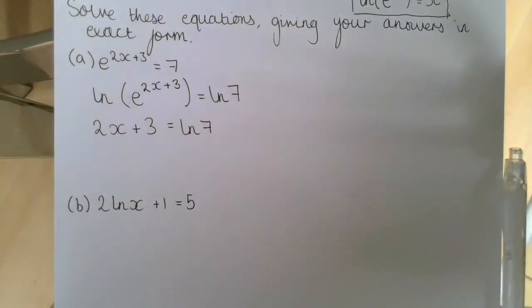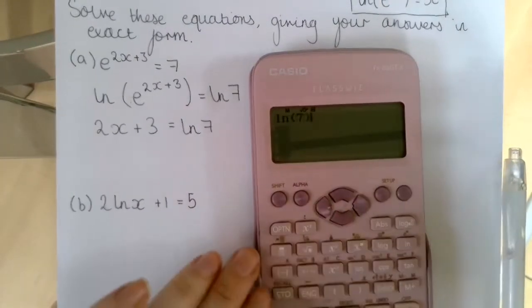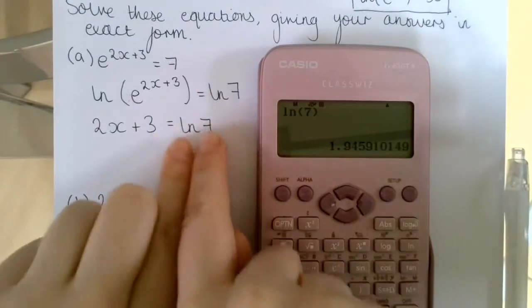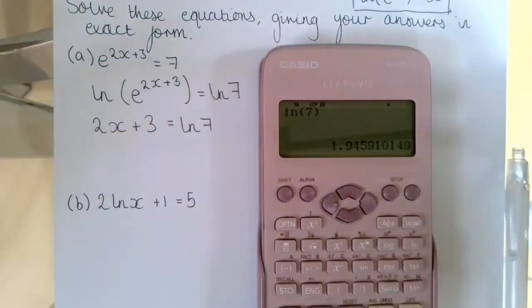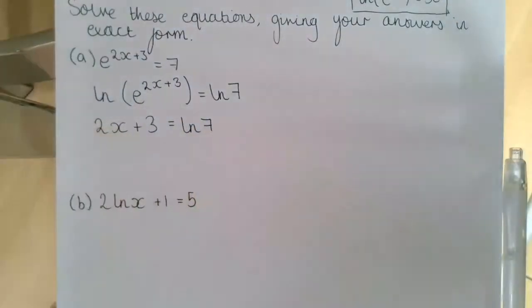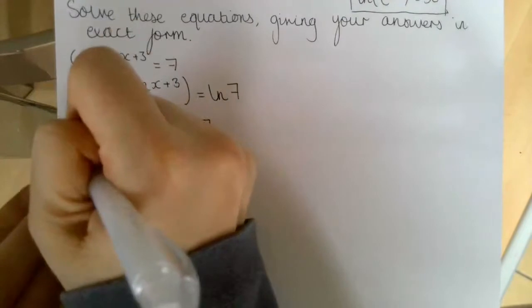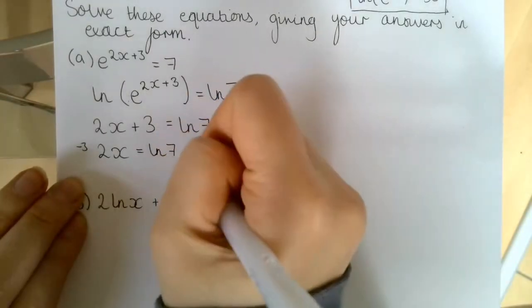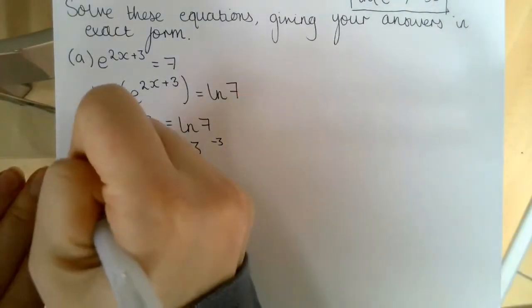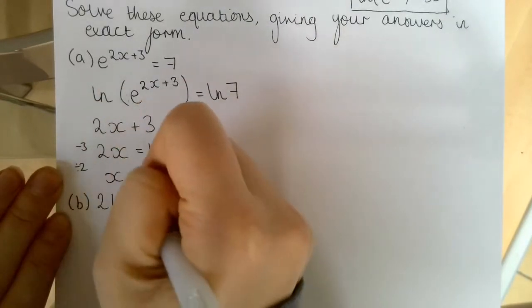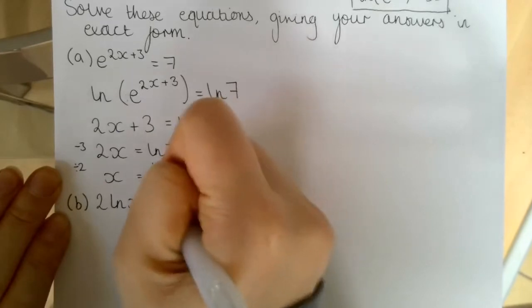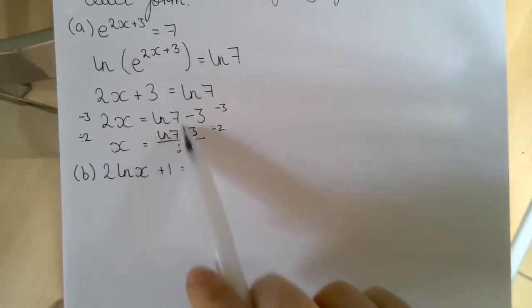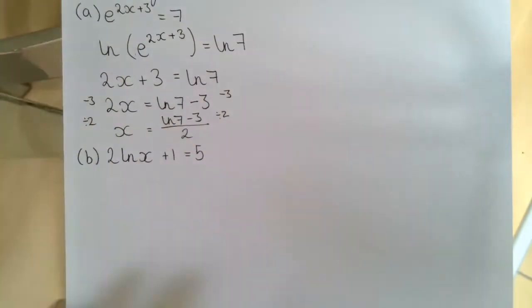We've now got an equation in terms of x. Remember, ln 7 is just a number — similar to pi being a number — so we simply solve for x. Subtracting 3 from both sides gives 2x equals ln 7 minus 3, then dividing by 2 gives x equals (ln 7 minus 3) divided by 2. We've left our answer in exact form by not rounding ln 7 to any decimal places or significant figures.